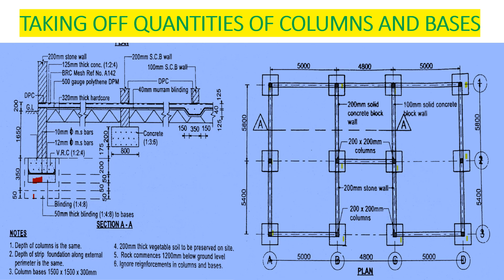Before we proceed, let's find the number of columns. We have: one, two, three, four, five, six, seven, eight, nine, ten, eleven, twelve — those are the columns. Each column has a base, a blinding, and then the column itself.